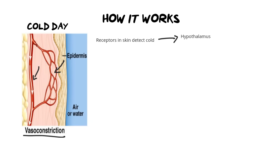That information is sent to the hypothalamus, which is a region in the brain responsible for maintaining basic bodily functions like ADH and water balance. It makes sense that the hypothalamus controls both water and heat, because they are the body's cooling mechanisms and go hand in hand. Once the information reaches this control center, a message is sent to the effector — the dermal arterioles, which are the small blood vessels just below the surface of the skin.